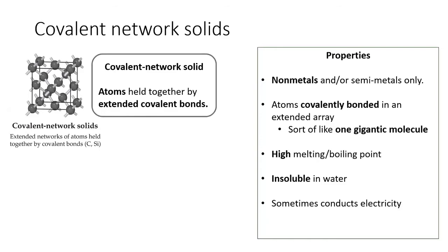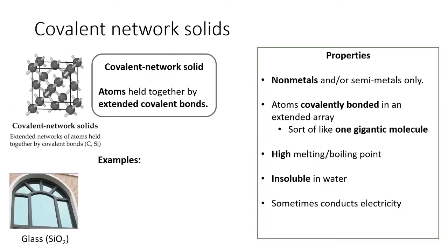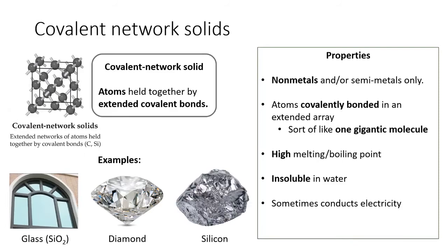Some covalent network solids are conductors, some are semiconductors, and others are great insulators. Examples of covalent network solids are glass, diamond, and silicon.